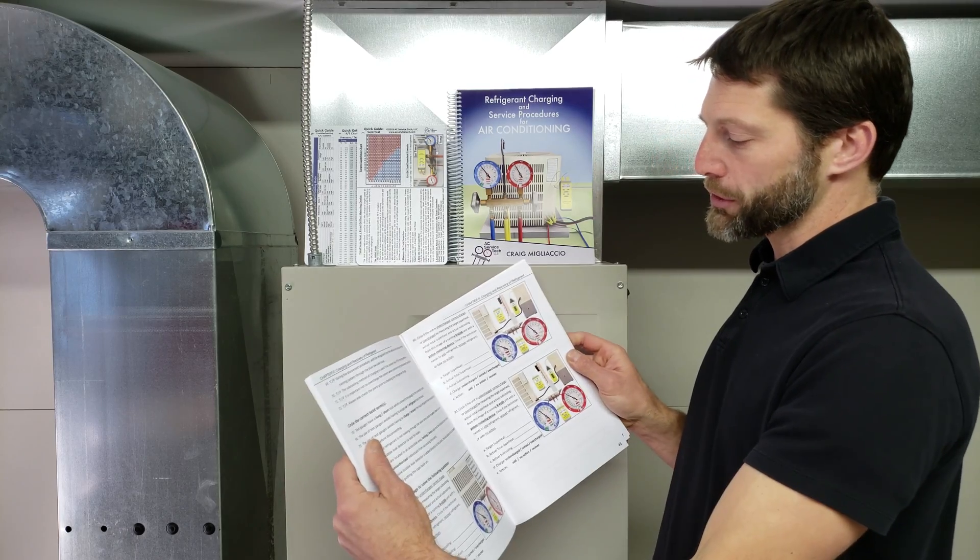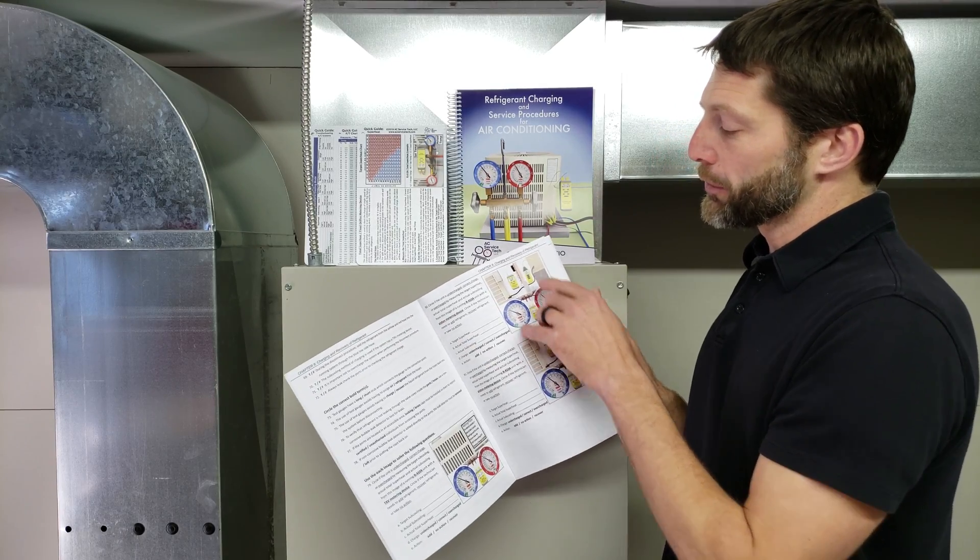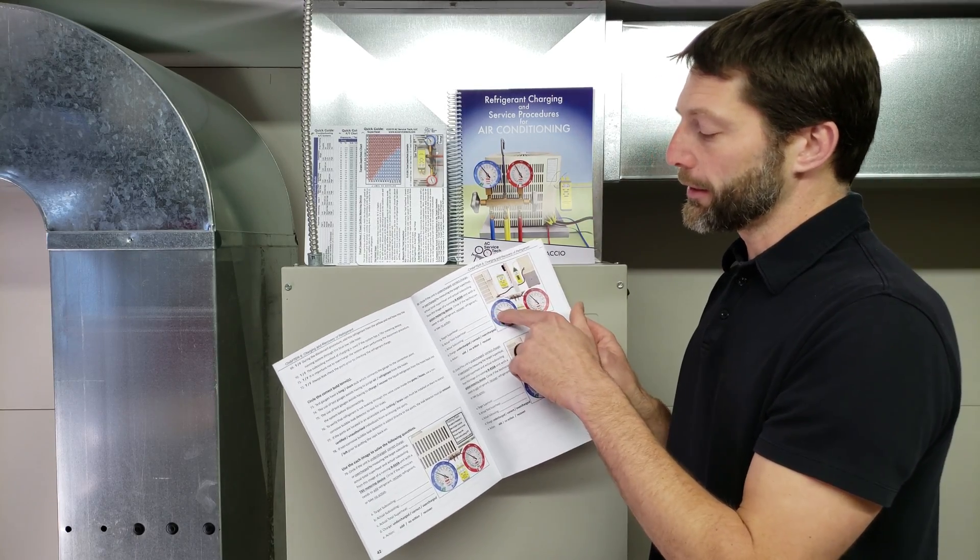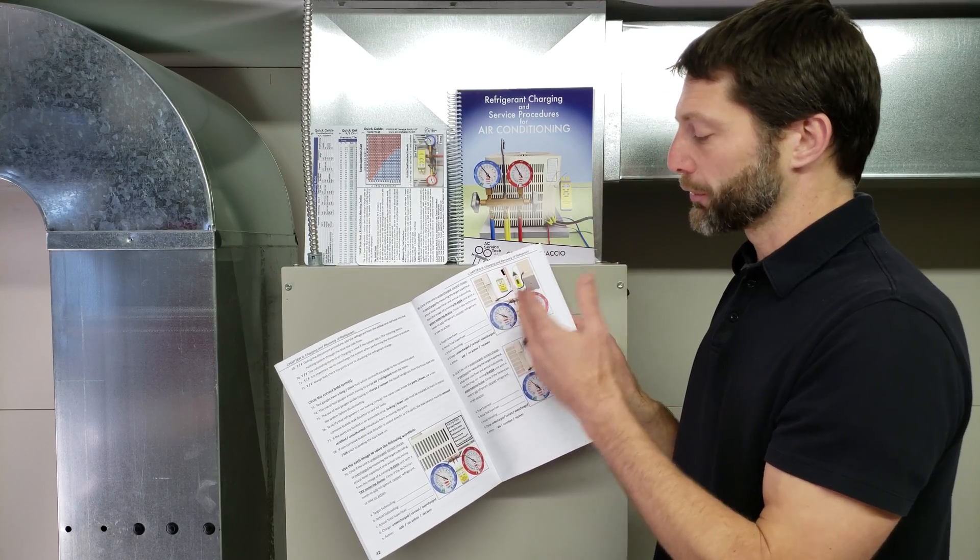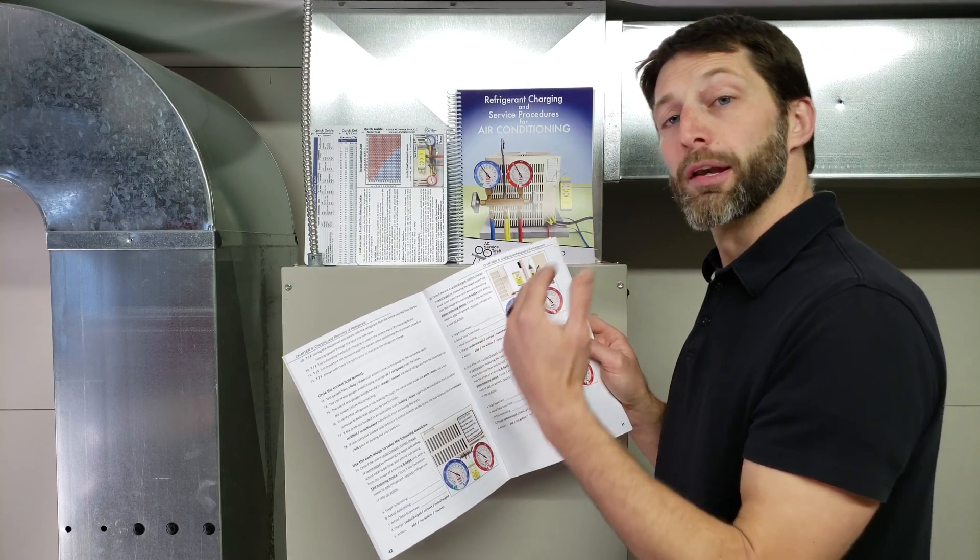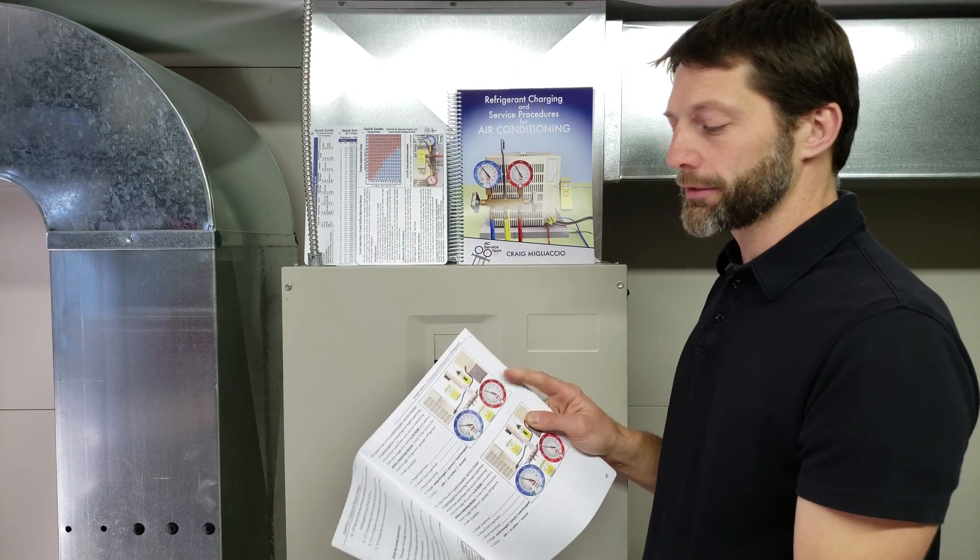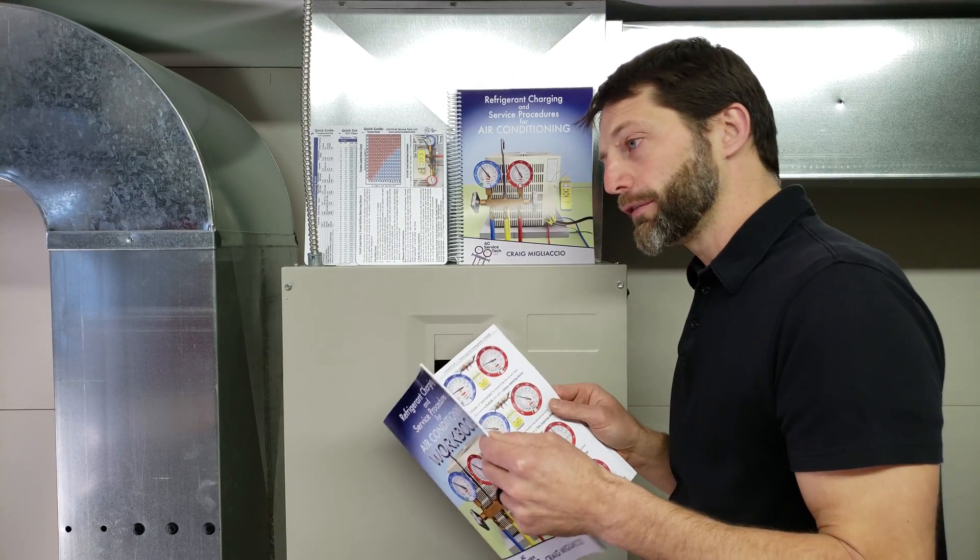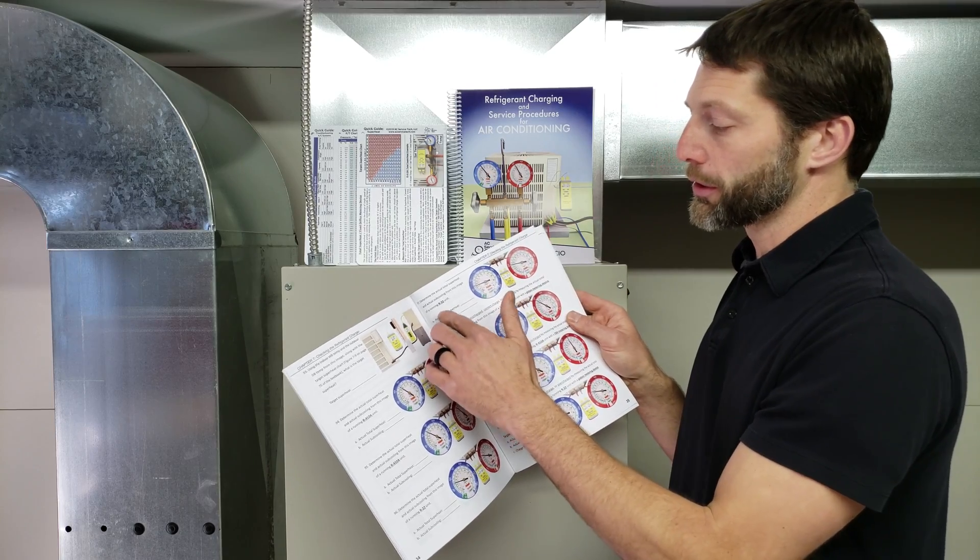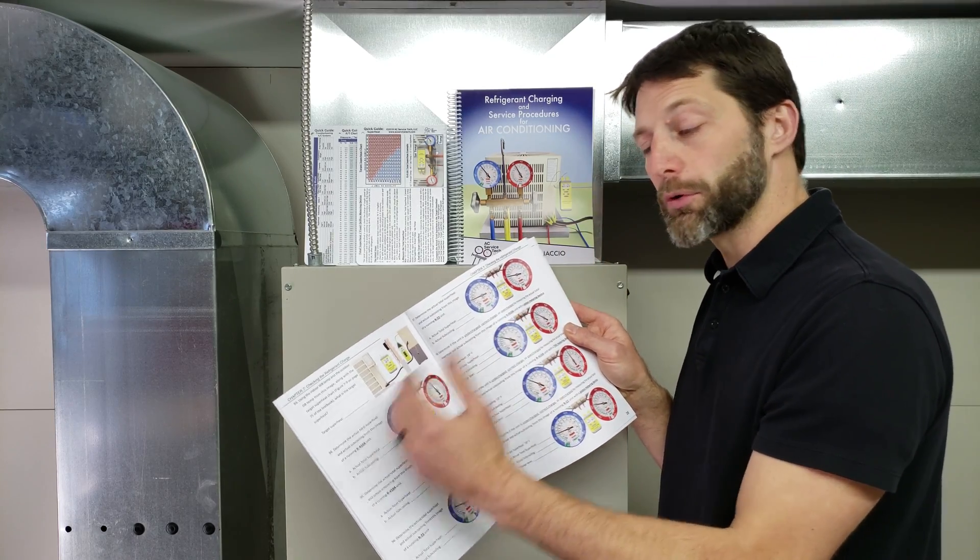For instance, questions like this where you're trying to read the target superheat and then read what the superheat is, and you're also checking your subcooling. You're determining is the unit overcharged, undercharged, correct charge, and then you're looking at tasks like do I need to recover refrigerant, do I need to add refrigerant. We have other questions where you're just checking the superheat, you're just checking the subcooling.